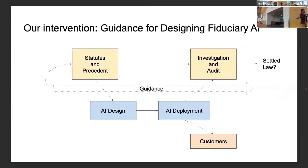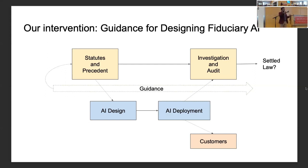We are writing this paper as an intervention into what we see as an unsettled area of law, as people are thinking about passing new statutes. But there are also cases where this already applies under existing law. Suppose there is a legal precedent or a statute — such as a governance act in the EU — establishing a fiduciary duty for some digital domain. Someone trying to design that AI might look to our paper for guidance about how to design something that is compliant with it. We also hope that if someone conducts an investigation or audit of compliance, they might use our paper as a framework for assessing that compliance.